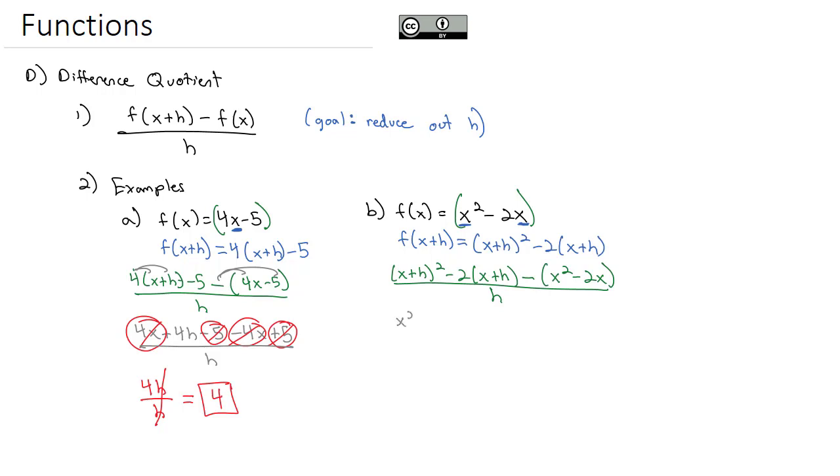Squaring the first term, we get x squared plus, remember we have to multiply x times h together, and then double it to get 2xh, plus h squared. Distributing the negative 2 through, we get negative 2x minus 2h. Distributing the negative through, we'll change both signs, giving us negative x squared plus 2x all over h.